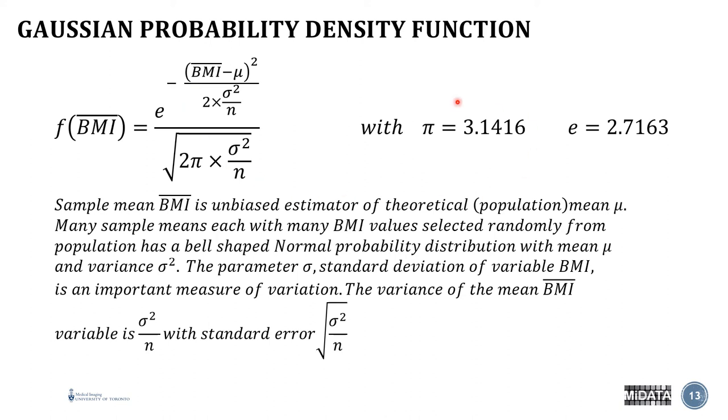And all of this of course don't worry about it, we've already talked about it I'm not going to kill you with math but essentially the sample mean is then an unbiased estimator of the theoretical or the population mean mu in this case. Now many sample means each with many BMI values selected randomly from the population will have what we've already described as a bell-shaped or normal probability distribution with mean mu and a variance of sigma squared.